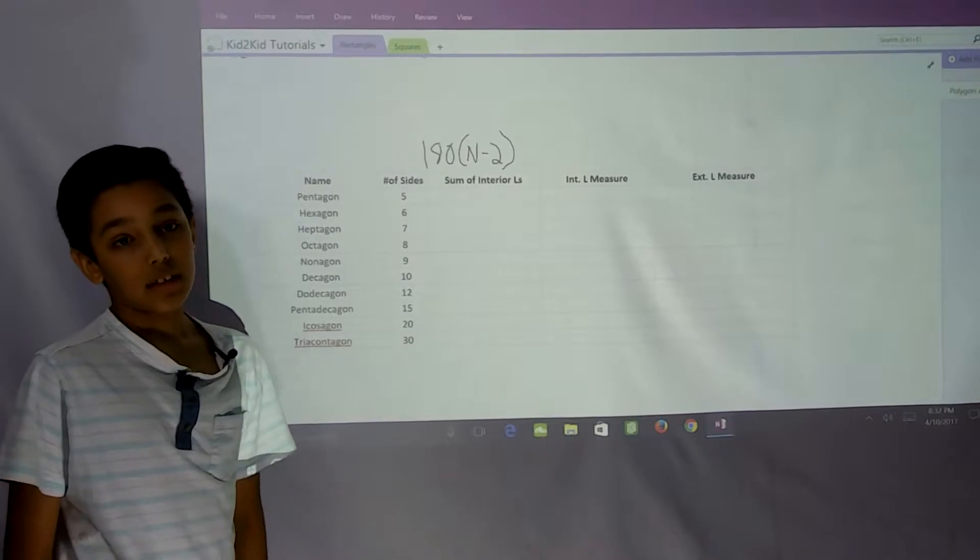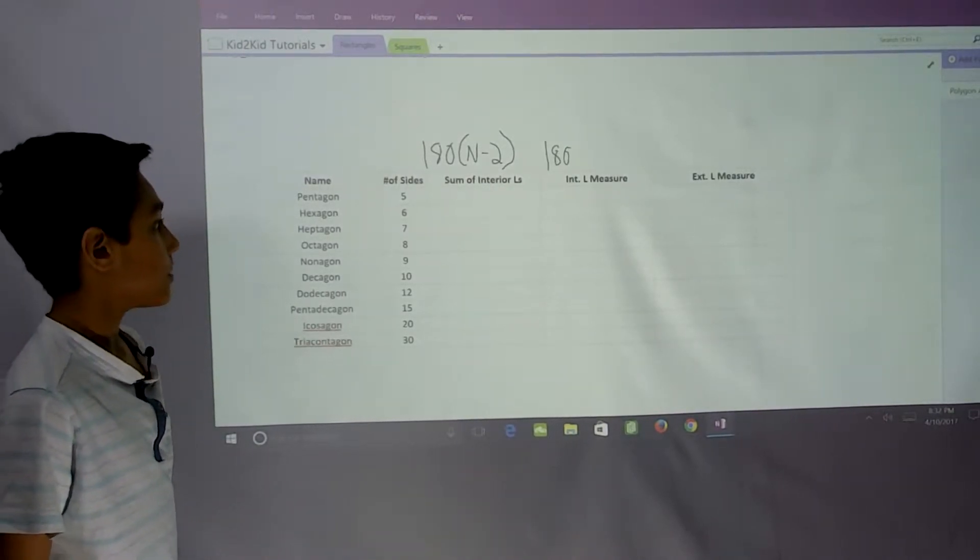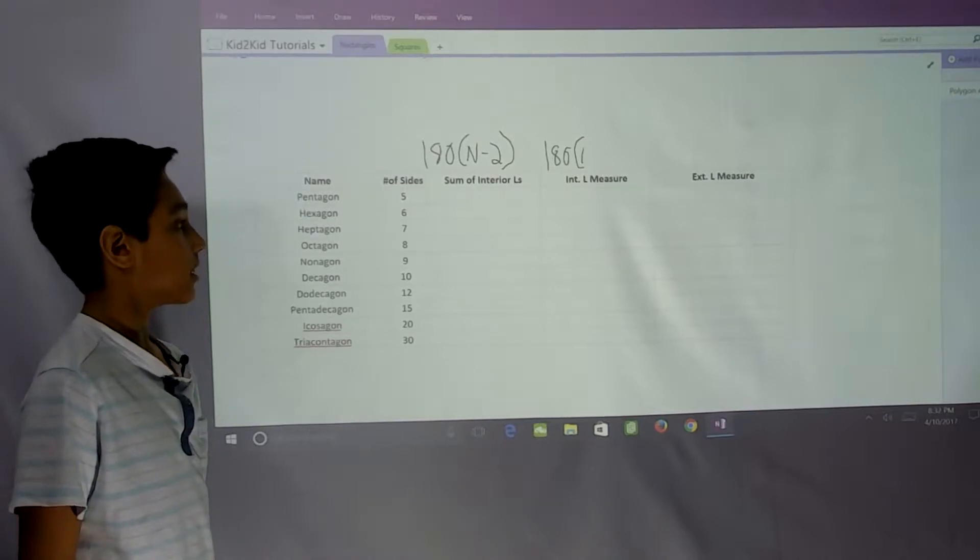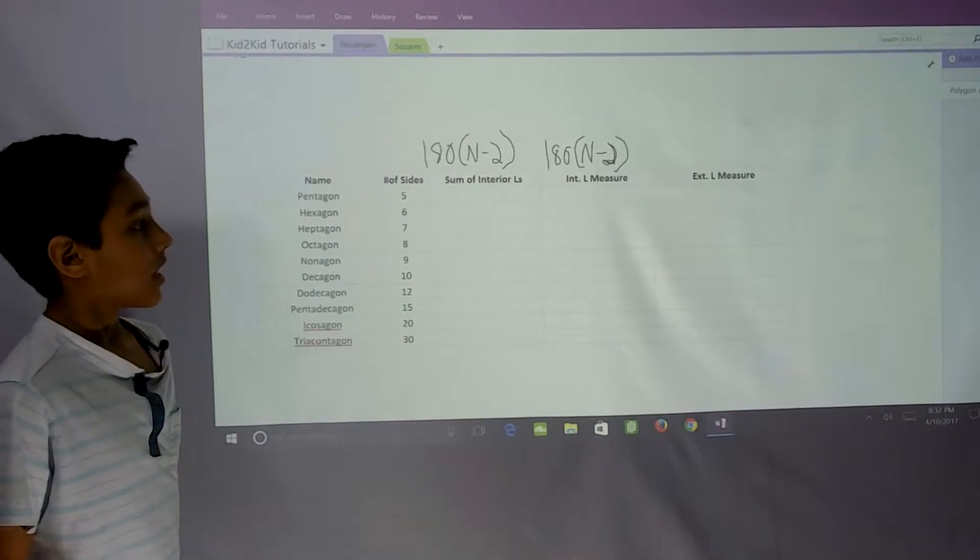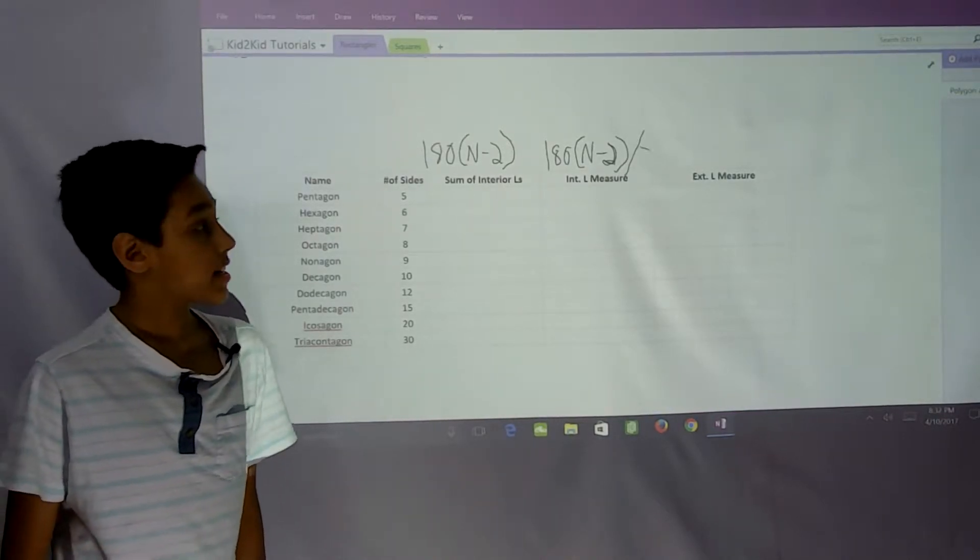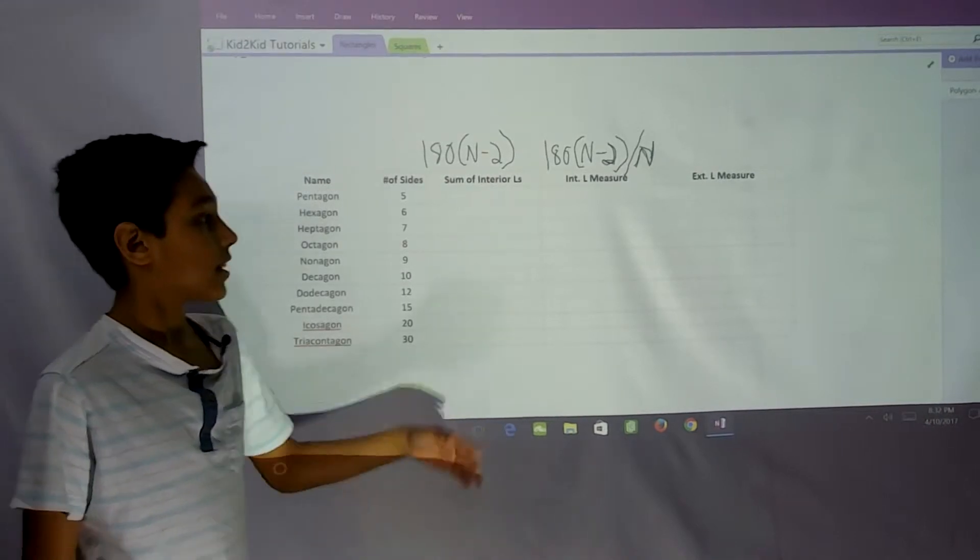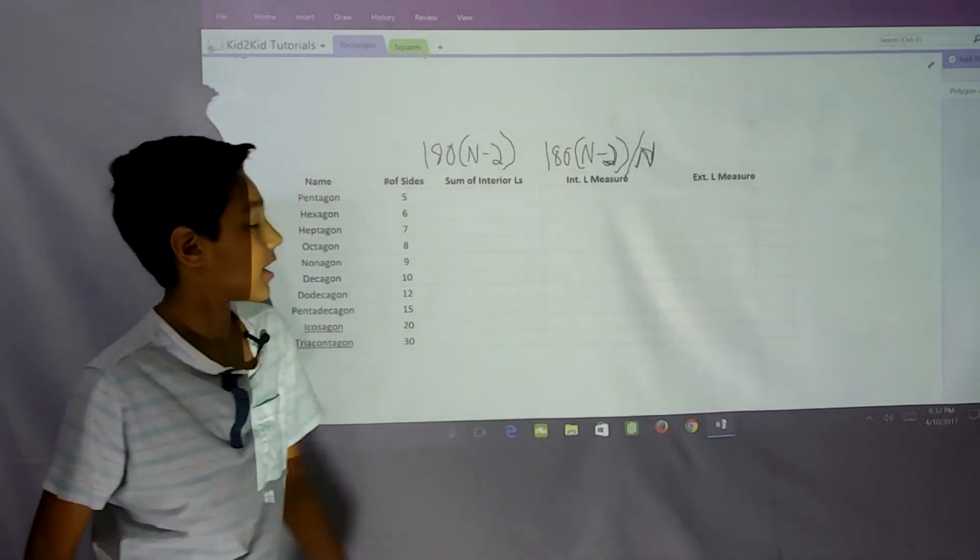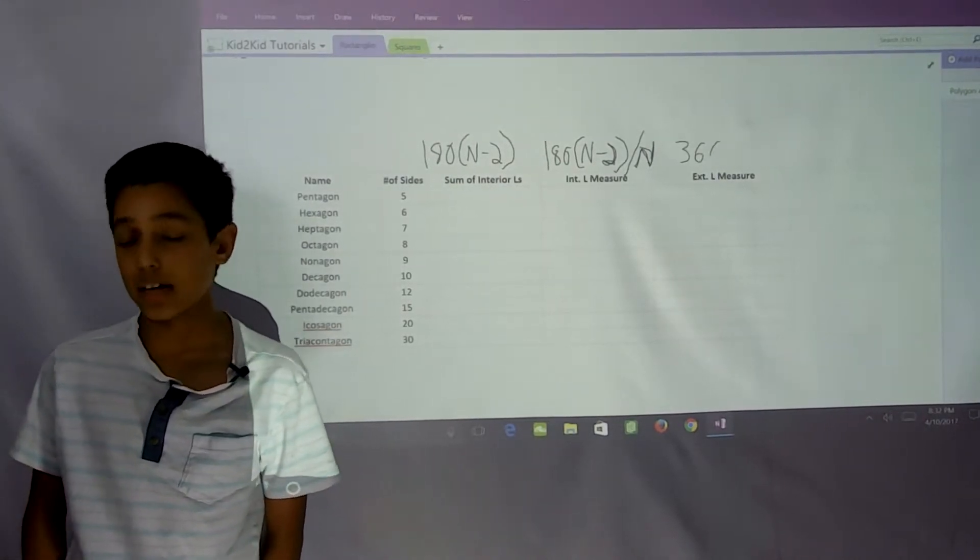For the interior angle measure, the formula is 180 times (n minus 2) divided by n. And for the exterior angle measure, we have simply 360 degrees divided by n.